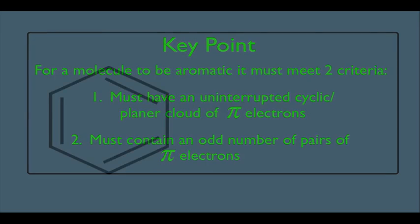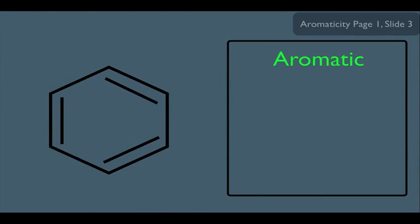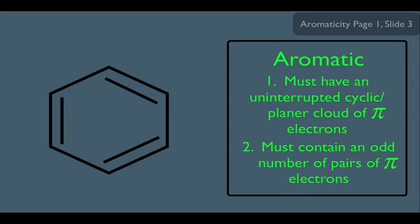Let's start with the most famous aromatic molecule: benzene. Let's see if it meets these two criteria. Remember, number one, it must have an uninterrupted cyclic planar cloud of pi electrons, and two, an odd number of pi electrons.